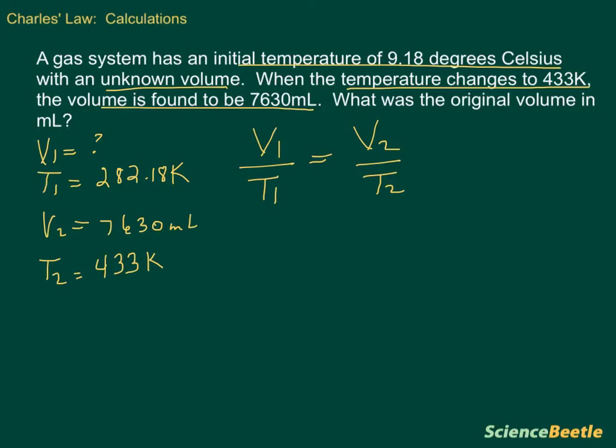Since everything's already been converted to the units that we need, I'm just going to erase and put the numbers that we have into the appropriate spot. Our V1 is an unknown, so we're going to leave that alone. But our T1, we can erase and put in the actual number. The actual number we have for temperature 1 is 282.18 Kelvin.